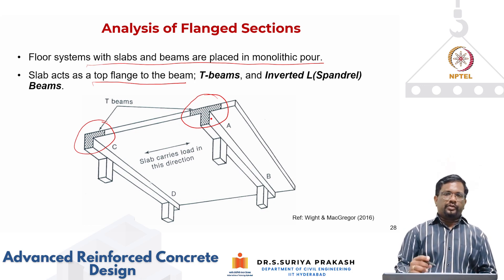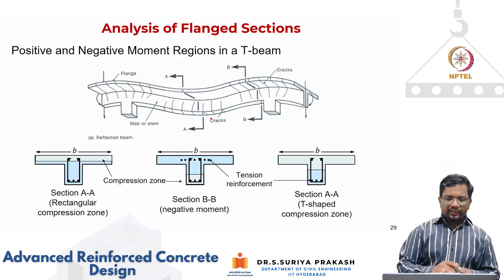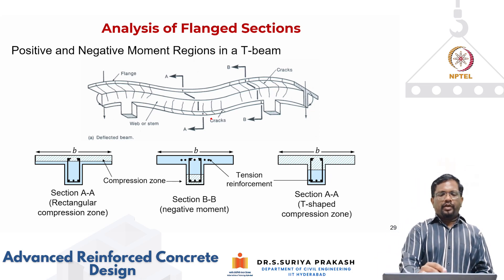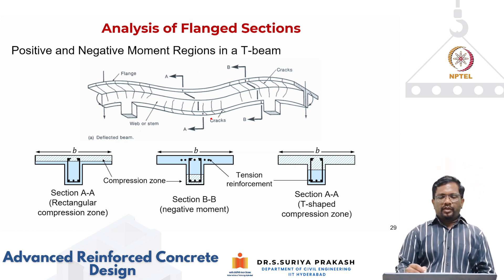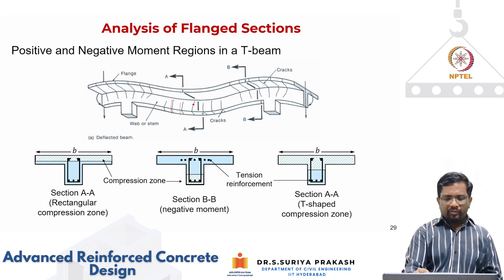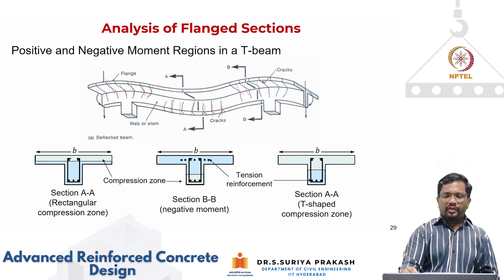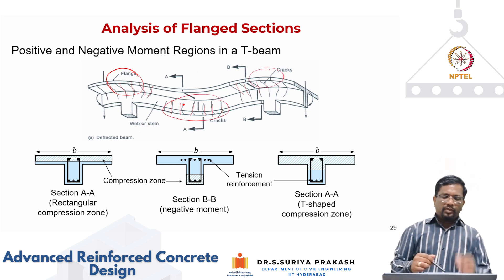Depending upon the location of the beam, a portion of the slab will act as part of the beam. Edge beams will have L-shaped flanges, while interior beams will have T-sections. That also depends upon whether you are looking at the mid-span or at the support for gravity loads. Taking a free body diagram of a beam as part of a continuous system undergoing bending: at mid-span you have sagging moment with cracks at the bottom, and at the support you have hogging moment with cracks at the top.